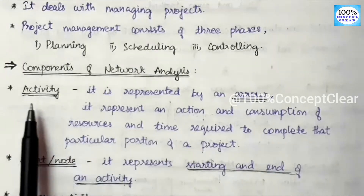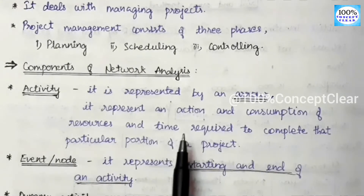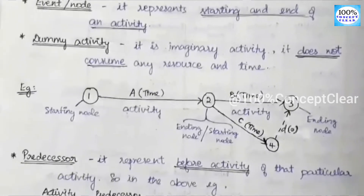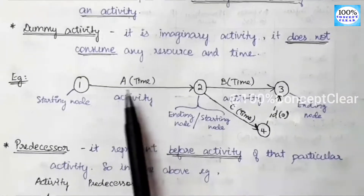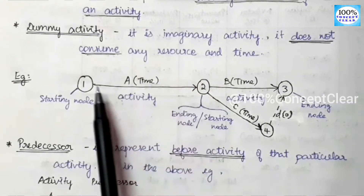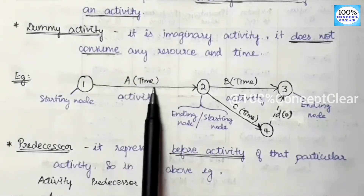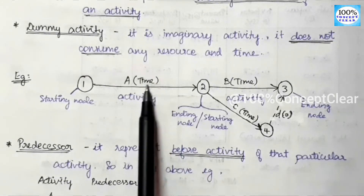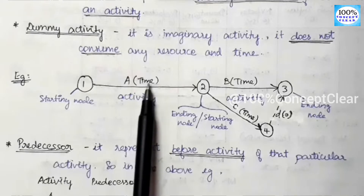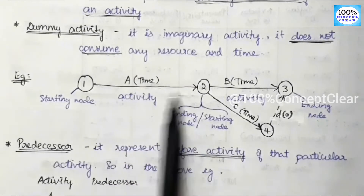An activity represents an action and the consumption of resources and time required to complete that particular portion of a project. In the project, for each particular activity, we have to use resources and time. In the network diagram, the activity is represented by an arrow mark, and we specify the time in this bracket.